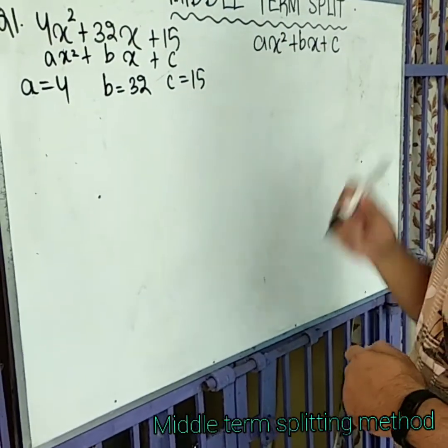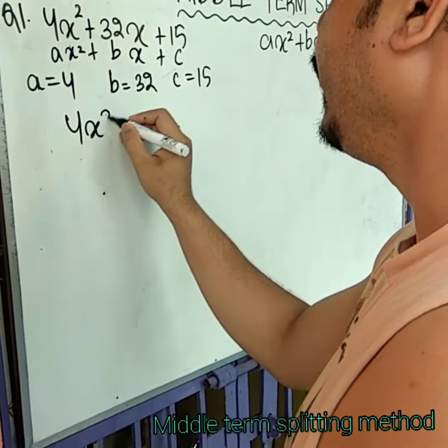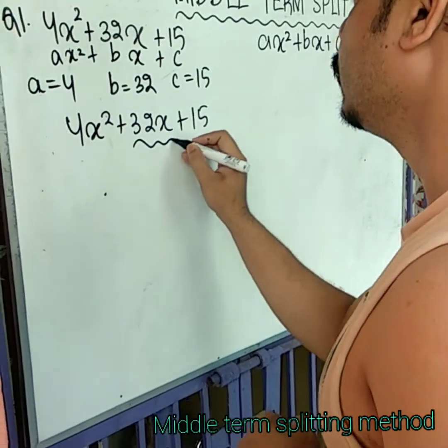We are doing middle term split. Middle term split means this middle term is 32x. This is how we break.